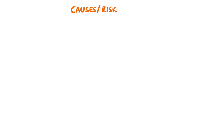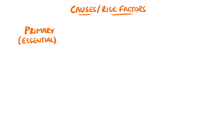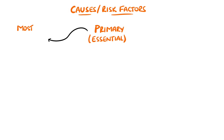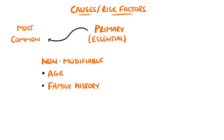Hypertension is divided into primary, also known as essential hypertension, or secondary hypertension, where an underlying condition is causing the increased blood pressure. Most patients have primary hypertension. In this case there are risk factors that you can do nothing about, such as age and family history, or risk factors that you can adjust, known as modifiable risk factors.